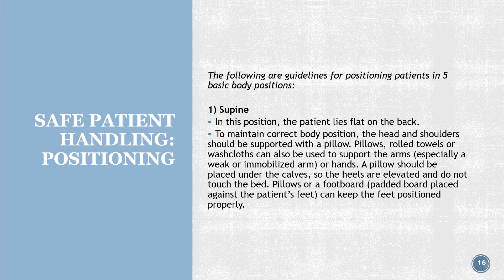Guidelines for positioning patients in five basic body positions. Position 1 — Supine: the patient lies flat on the back. To maintain correct body position, the head and shoulders should be supported with a pillow. Pillows, rolled towels, or washcloths can also support the arms, especially a weak or immobilized arm or hand. A pillow should be placed under the calves so the heels are elevated and do not touch the bed. A foot board — a padded board placed against the patient's feet — can keep the feet positioned properly.